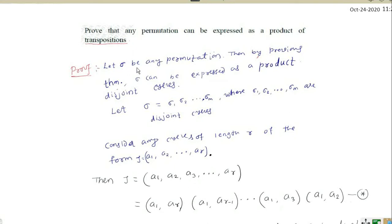Let sigma be any permutation. Sigma is a permutation of n symbols, that is sigma belongs to S_n. Then by the previous theorem, sigma can be expressed as a product of disjoint cycles.